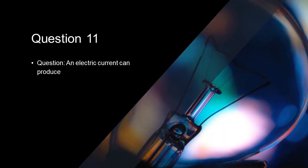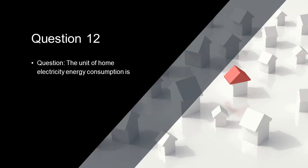An electric current can produce heat, light and magnetic fields. The unit of home electricity energy consumption is kilowatt hour.